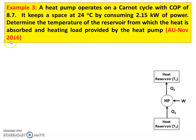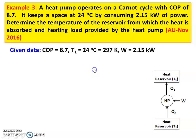Example number 3, from the November 2016 question paper — a heat pump. The heat pump absorbs heat from a low temperature reservoir and supplies heat to a high temperature reservoir, with work input required. A heat pump operates on the Carnot cycle with a COP of 8.7. It keeps the space at 24 degree Celsius by consuming 2.15 kilowatt of power. Determine the temperature of the reservoir from which heat is absorbed and the heating load provided. Given: COP = 8.7, T1 = 24°C = 297 Kelvin, W = 2.15 kW.